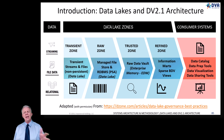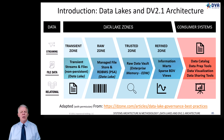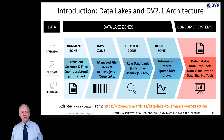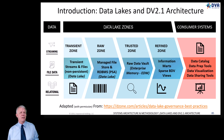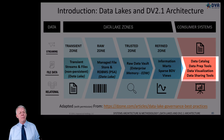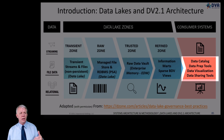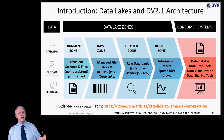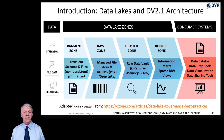At the end of all of this, we have the consumer systems. These include data catalogs, data prep tools, data visualization, and sharing tools. Data catalogs are more and more important — they help you tie metadata to all of these processes and everywhere that lineage flows, including applying data governance.